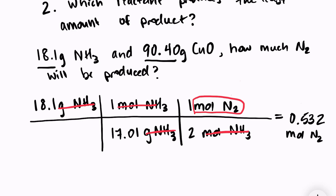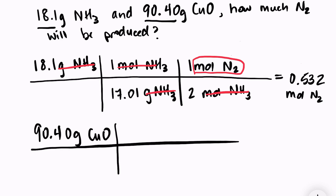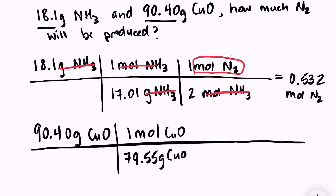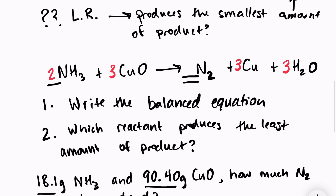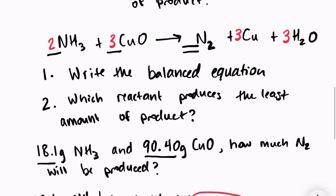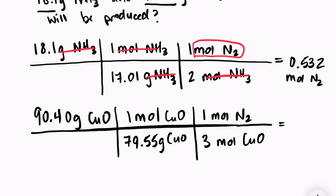Now let's do the same for copper oxide. I have 90.4 grams of CuO. First, convert to moles: 1 mole on top, and copper has a mass of about 63.55 g and oxygen 16 g, giving 79.55 g/mol for CuO. Then I use the mole ratio — nitrogen has a coefficient of 1 and copper oxide has a coefficient of 3 — so I put 1 mole N2 on top and 3 moles CuO on the bottom. Calculating: 90.4 ÷ 79.55 ÷ 3 = 0.380 moles of N2.